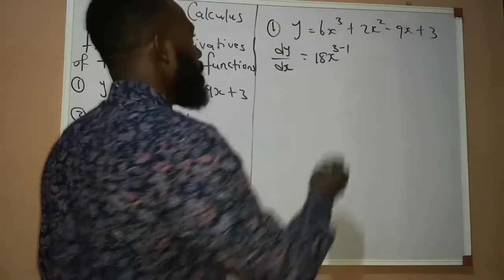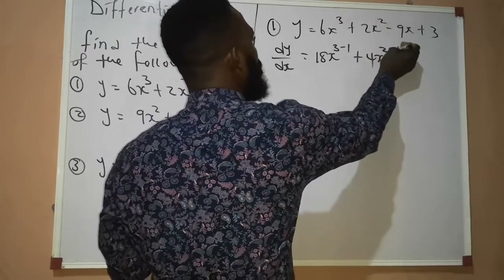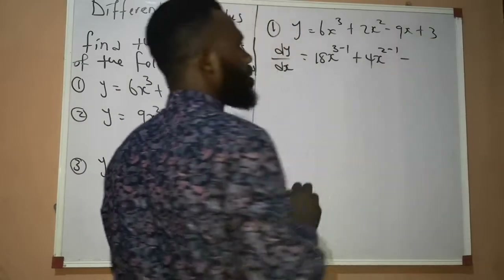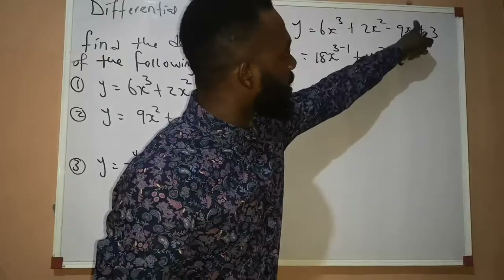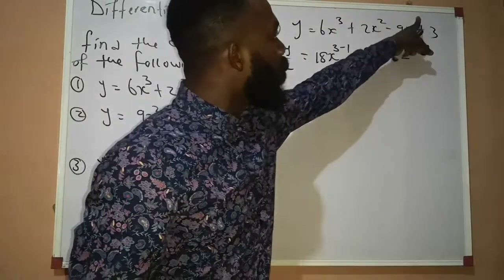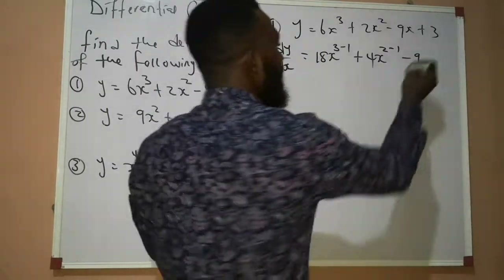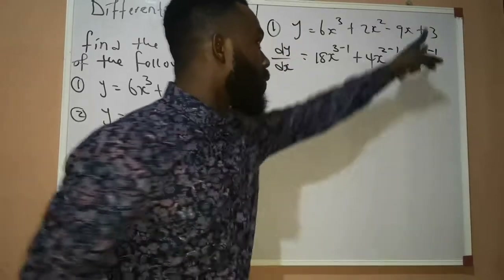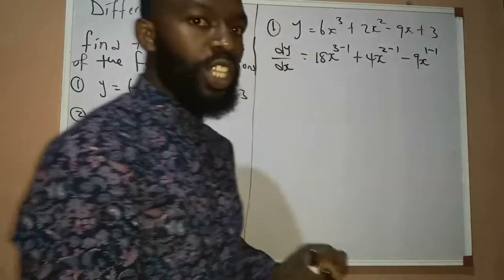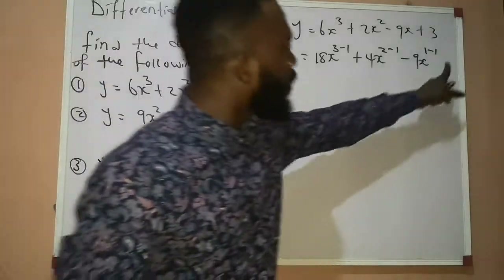2 times 2 gives us 4, then we have 2 minus 1. Now don't forget that there is a 1 here — where there is no power with the x, it means x is carrying power 1. Now if 1 should multiply 9, we will get 9, and then we are going to subtract also 1 from the power: 1 minus 1. Now if you differentiate 3, the answer is 0. When you differentiate a number without x, it is 0.